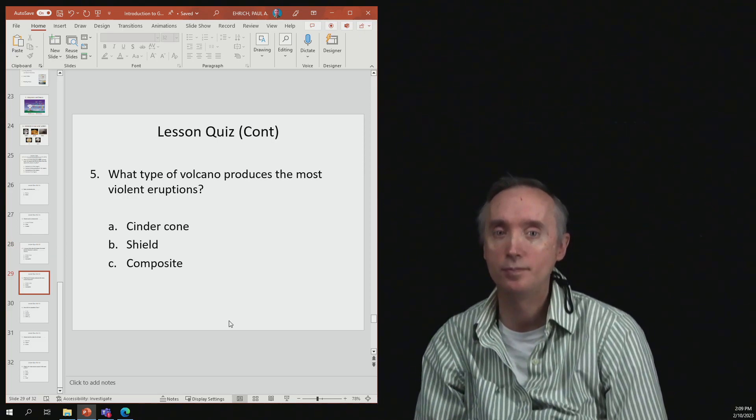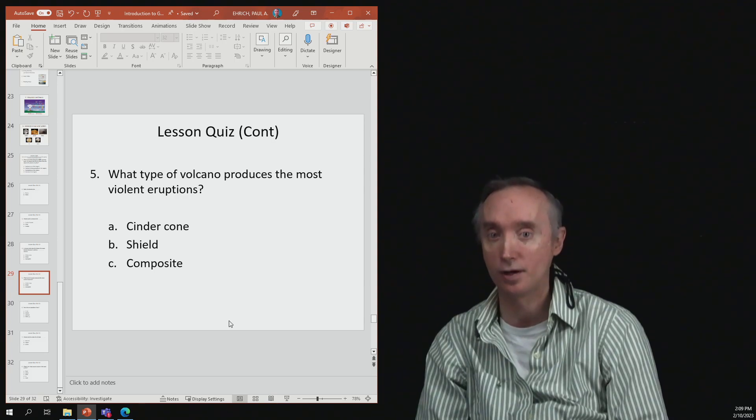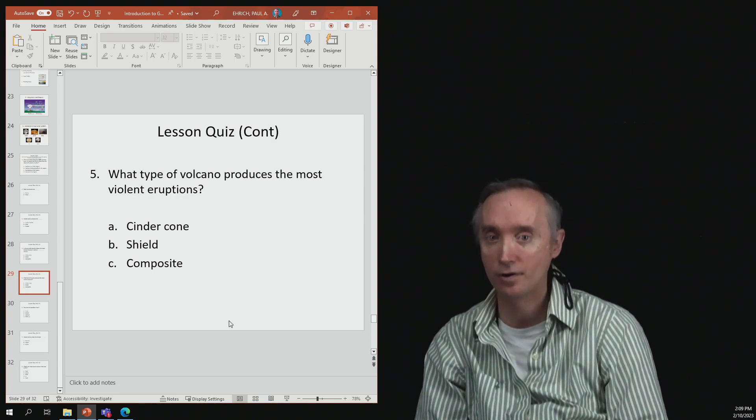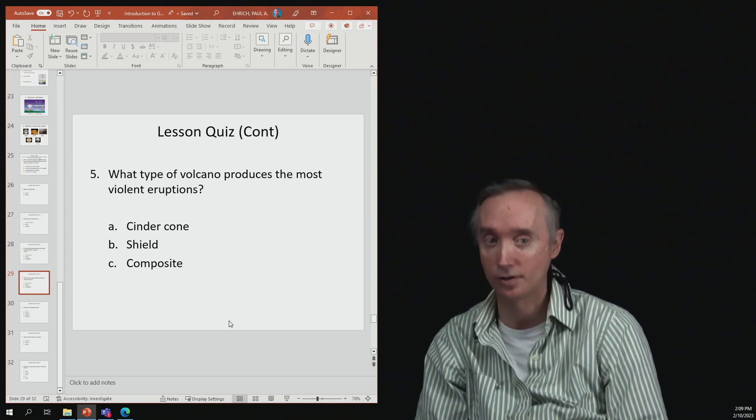What type of volcano produces the most violent eruptions? That would be the stratovolcano, and another name for that is the composite volcano.